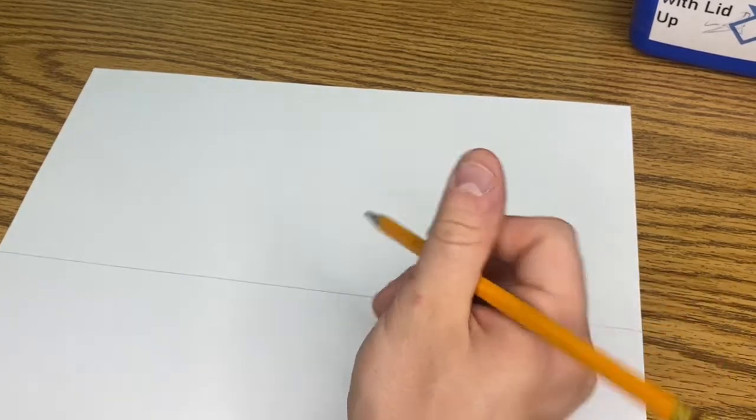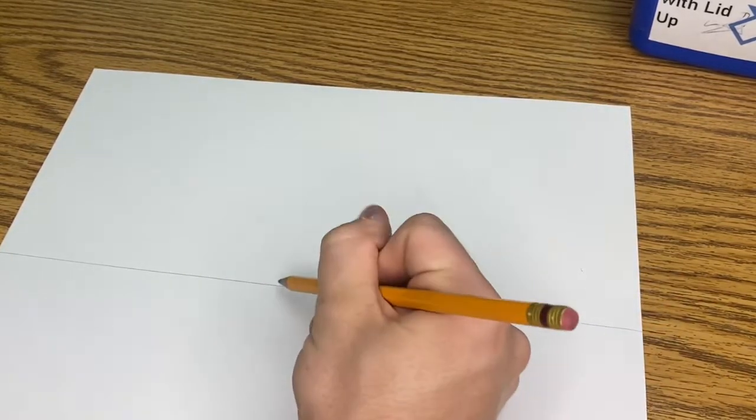Okay so now we need to do the vanishing point. The vanishing point is always right in the middle. If you put anywhere else it's going to be too confusing unless you're just expert level. Give us a thumbs up when you're ready.